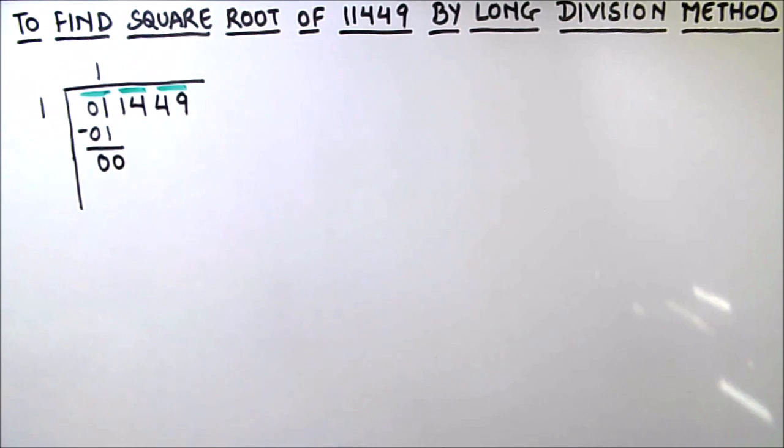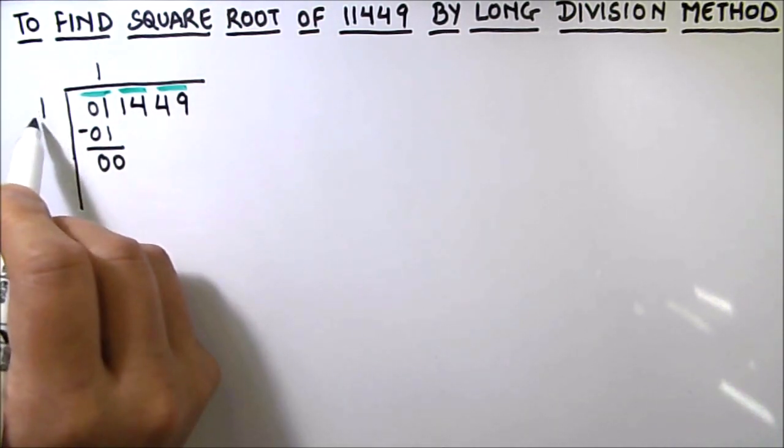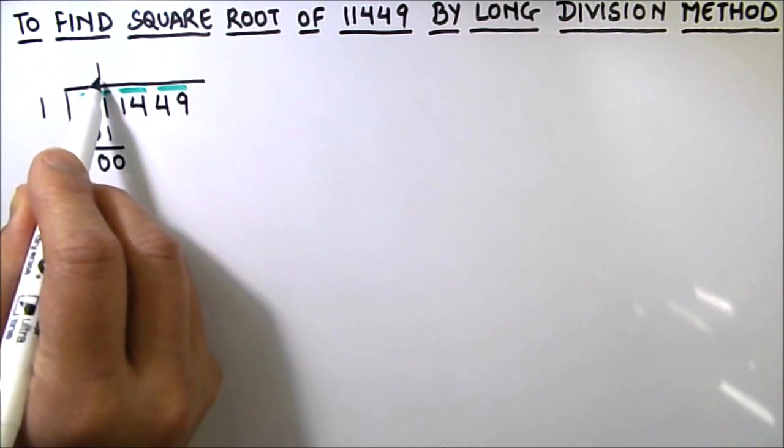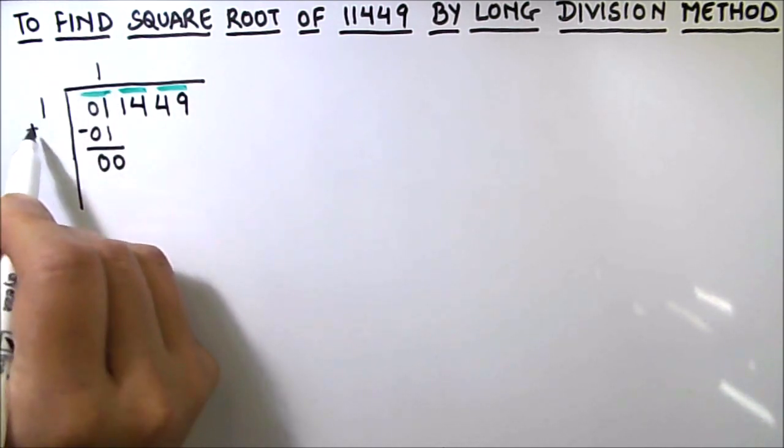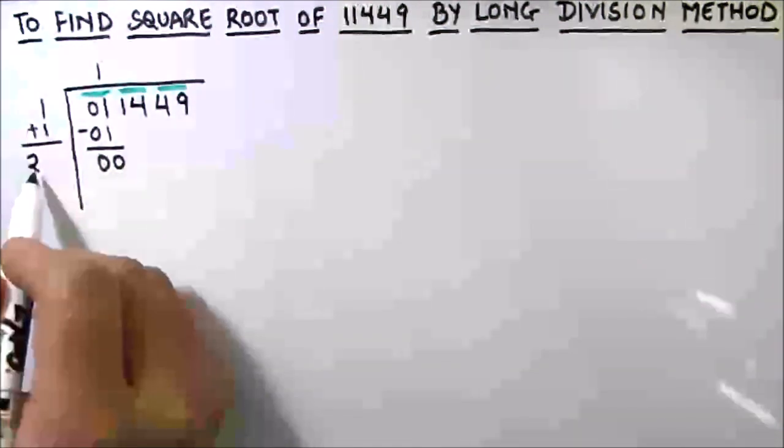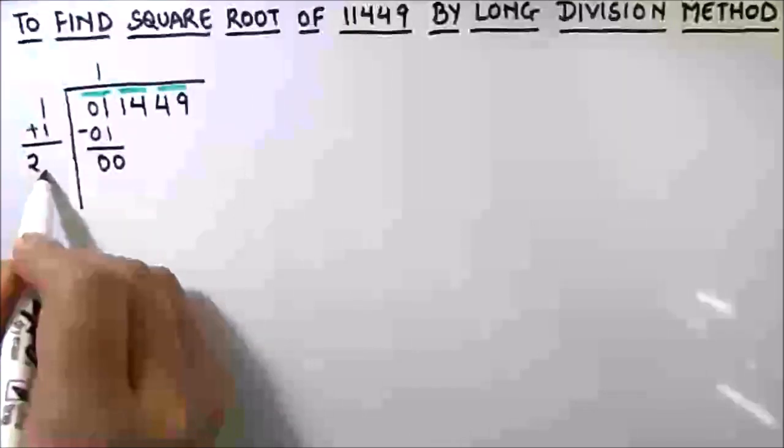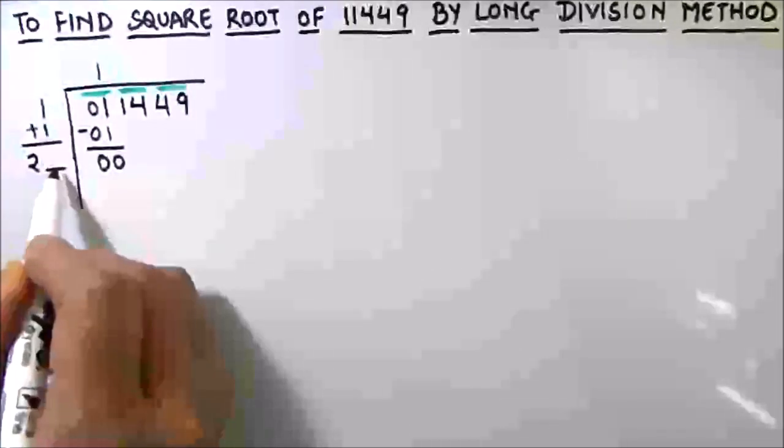The next step is to find the next divisor. For the next divisor, we have to add the same number as in the quotient to get one of the digits in the next divisor. So we have one of the digits in our divisor as two, and we have to annex one more digit here for our next divisor.